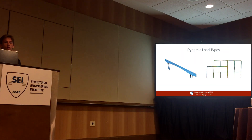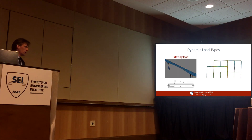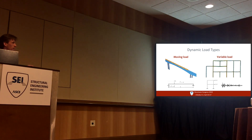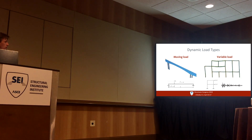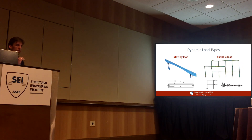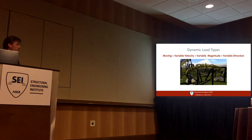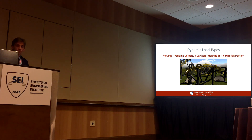Let's start by distinguishing two different dynamic load types. The first one is a moving load — for example, a train passing through a bridge. In this case the magnitude of the load is constant but its location is changing with constant velocity. The second one is a variable load like seismic load, where the load application points are fixed but the magnitude is changing over time. But what if the load is moving and changing over time, its velocity is not constant, and its direction is also changing? As you've already guessed, it's a roller coaster.